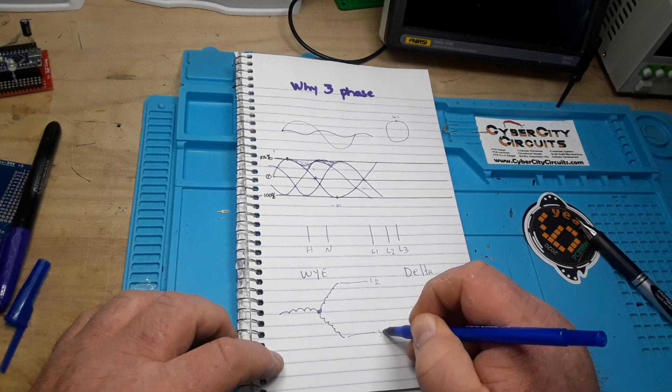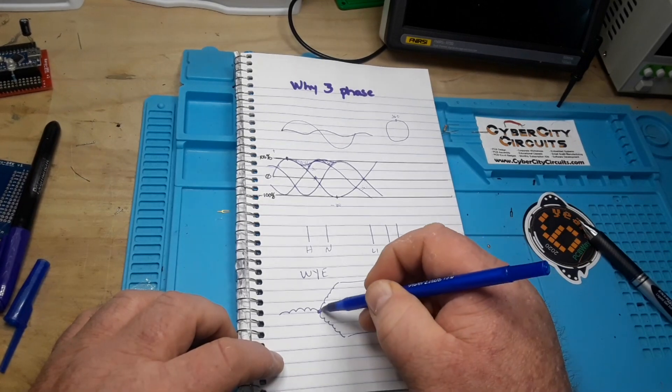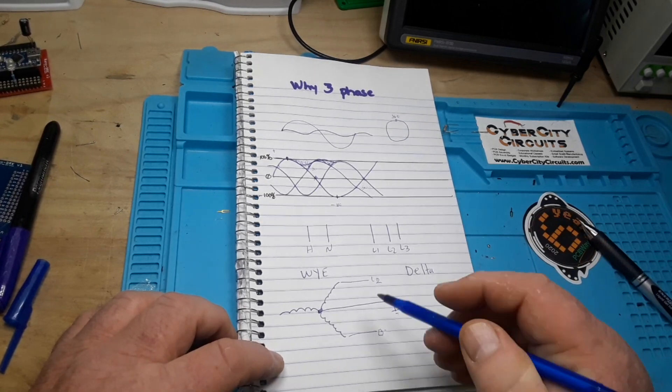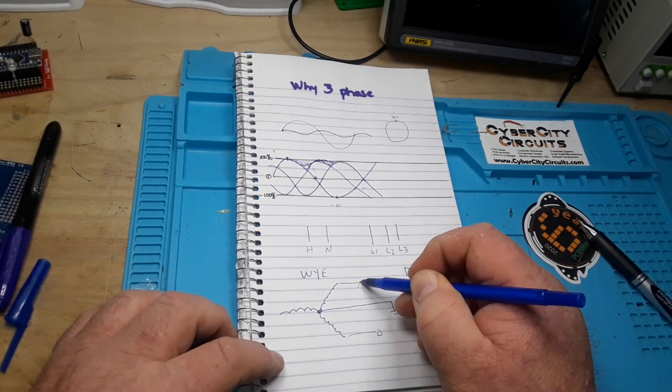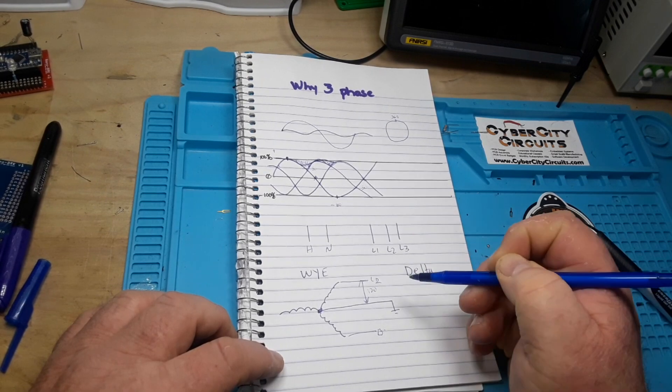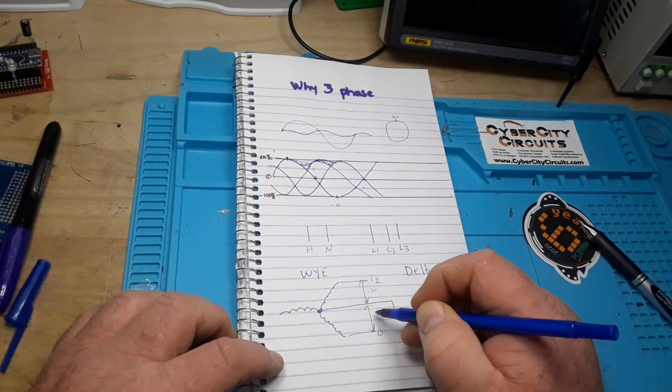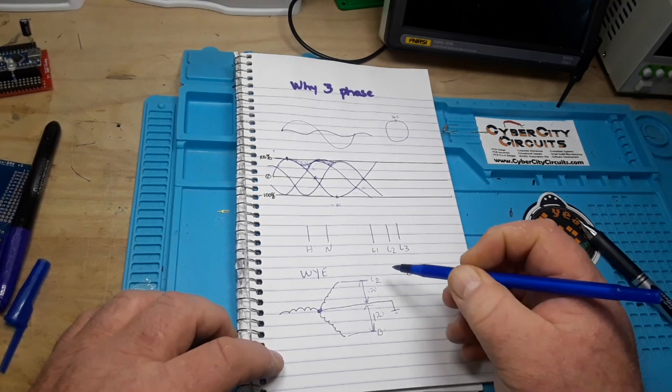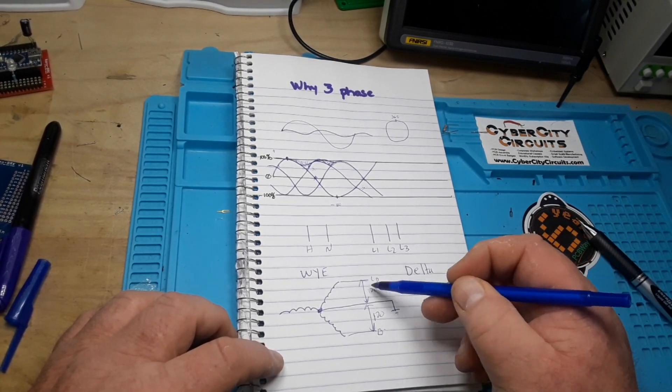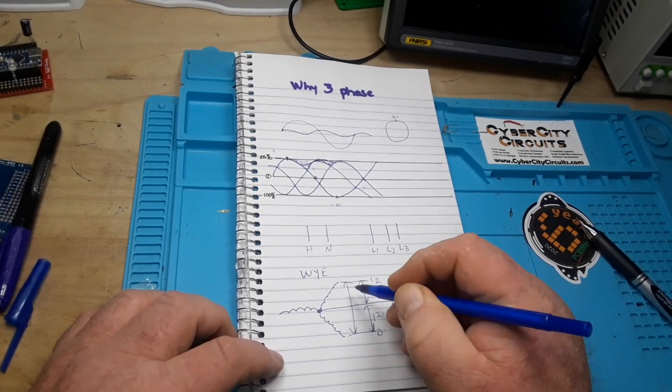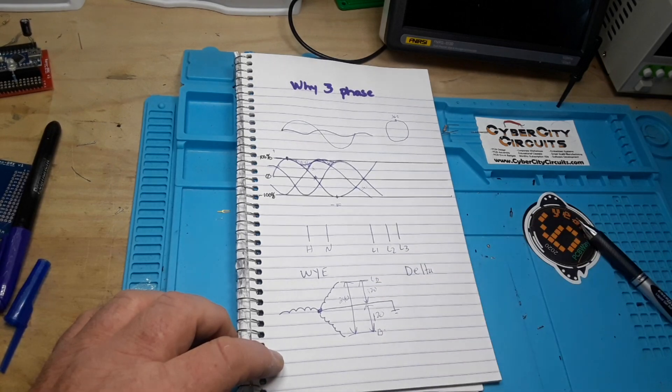Then we come off our neutral point with a ground. Say you have 120 volts here, then you would have 120 volts here between each leg and ground, but you would get 240 volts here.